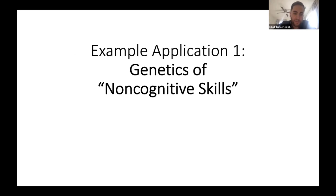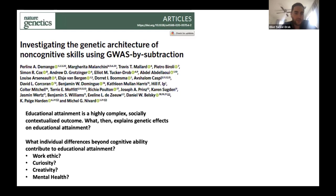Let me show examples of how this methodology answers questions relevant to social science. The first concerns the genetics of what has been called non-cognitive skills, published just last month in Nature Genetics. Educational attainment is a highly complex, socially contextualized, but also heritable outcome. How can that be? What explains the genetic effects on education? Going back 30 years of social science research, people have asked what individual differences beyond cognitive ability explain educational attainment — perhaps work ethic, curiosity, creativity, or aspects of mental health.